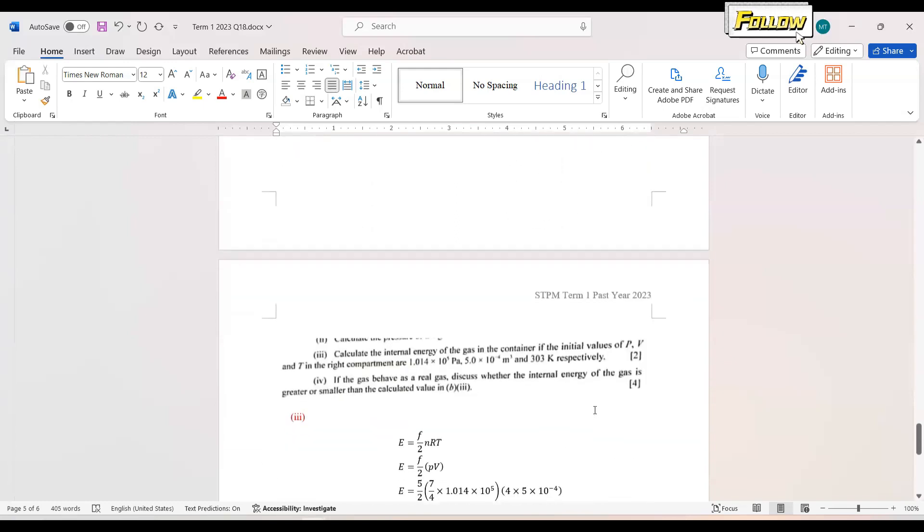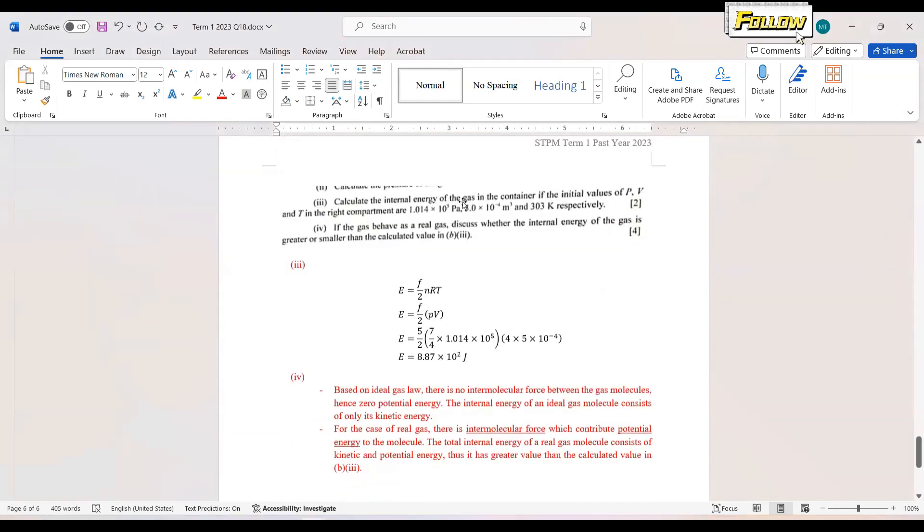We move on to question 3: How do the internal energy of gas in the container if the initial values of P, V, and T are given as follows? We need to use the formulas that we derived in B: the energy equals F over 2 NRT. We are not given the number of moles, so we can convert NRT equals PV since we have P and V.